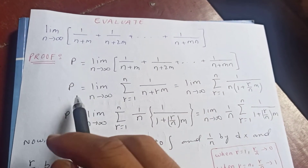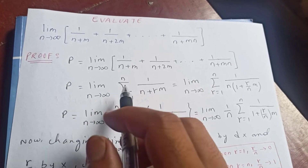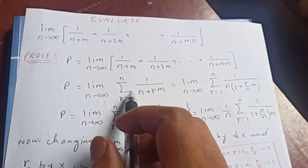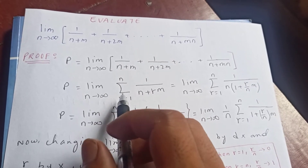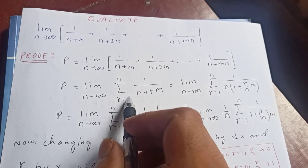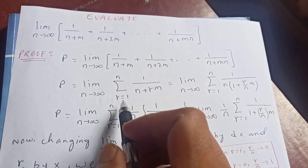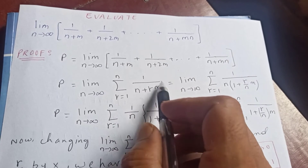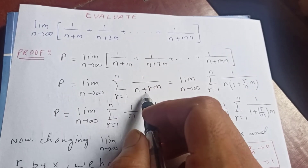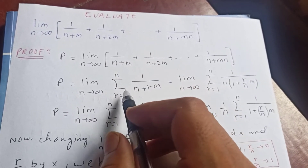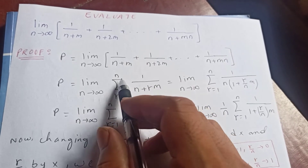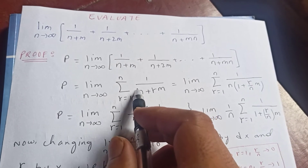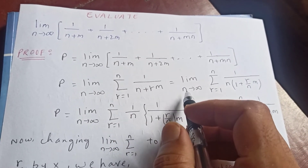P is equal to the limit as n tends to infinity of the sum from r = 1 to n of 1 over (n + r·m). We can verify: if r = 1 we get 1 over (n + m), if r = 2 we get 1 over (n + 2m), and so on up to r = n giving 1 over (n + nm). This is correct.